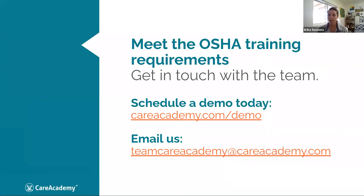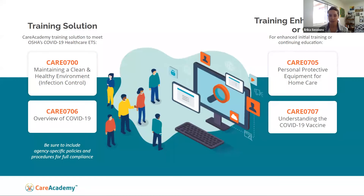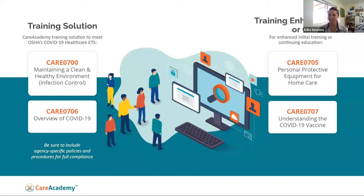Be sure to include your agency and business-specific policies and procedures for full requirements. When you read through those regulations, you'll see in some of the 21 training topics the phrases 'agency specific,' 'employer specific,' and 'business specific.' OSHA really wants to see what you're doing in your business and they want to see that documentation — and that is how you will gain full compliance.